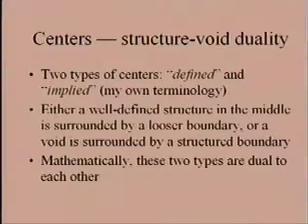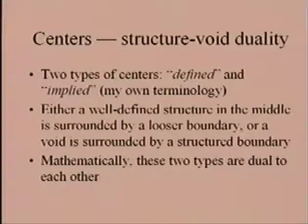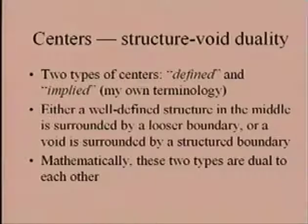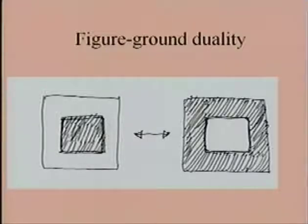The theory of centers identifies a visual field that focuses on specific regions. Centers can be of any size, and they tie space together by reinforcement. We use recursion to construct centers on different scales, leading to a fractal property. There are two types of centers: a defined center, where a well-defined structure sits in the middle of a region, and an implied center, where a structured boundary focuses on an empty middle. These two types are dual to each other — I refer to it as a structure-void duality, analogous to figure-ground duality in architecture.